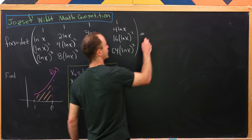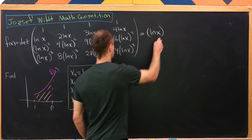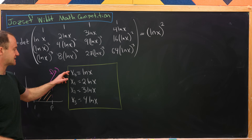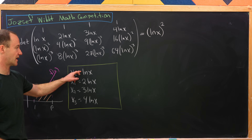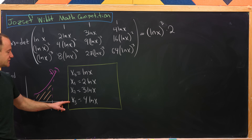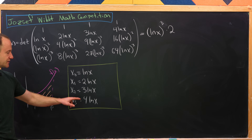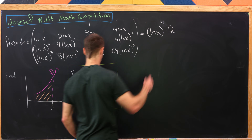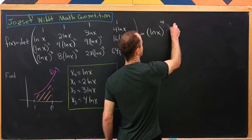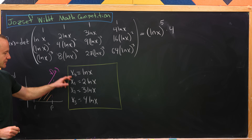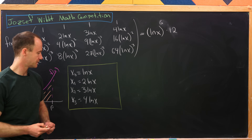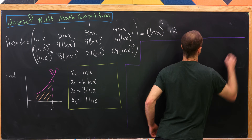Using the Vandermonde determinant formula: x1 minus x0 = ln x, x2 minus x1 = ln x (giving (ln x)^2 so far), x2 minus x0 = 2 ln x (bringing it to 2(ln x)^3). Then x3 minus x2 = ln x (fourth power), x3 minus x1 = 2 ln x (giving 4(ln x)^5), and x3 minus x0 = 3 ln x (giving 12(ln x)^6). So f(x) = 12(ln x)^6.